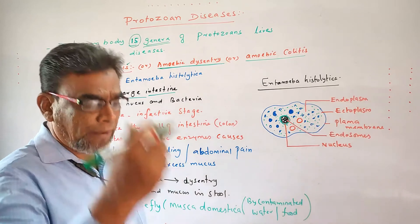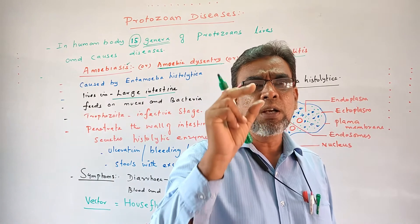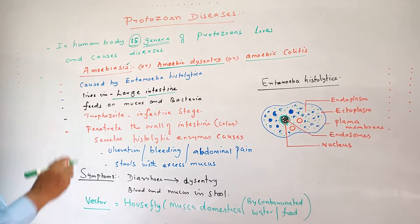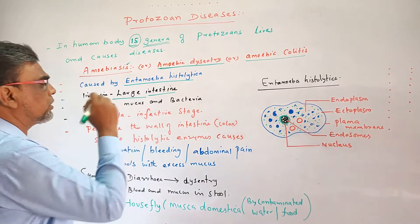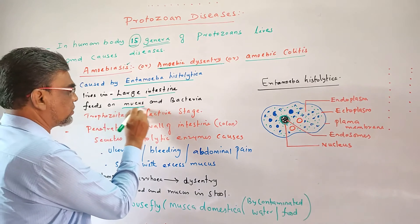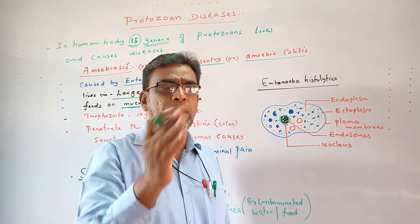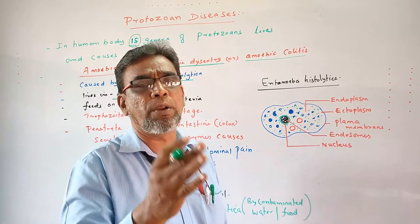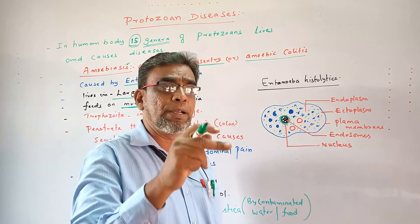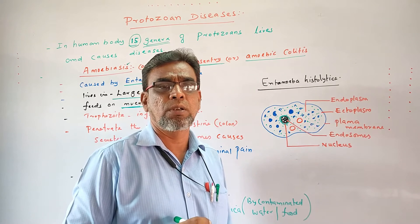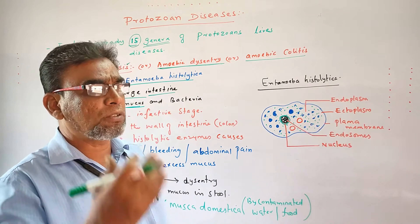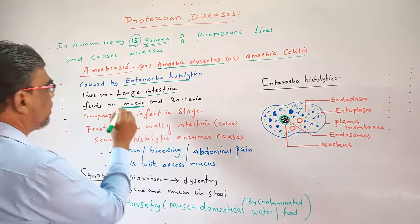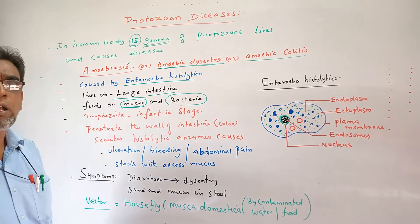This Entamoeba histolytica especially lives in the large intestine. When infection takes place, Entamoeba histolytica goes to the large intestine where it lives. It feeds on mucus — the internal organs are covered by a special substance called mucus which gives protection and immune support to the organ. Entamoeba histolytica feeds on mucus and also on bacteria present inside the body which are useful to us.